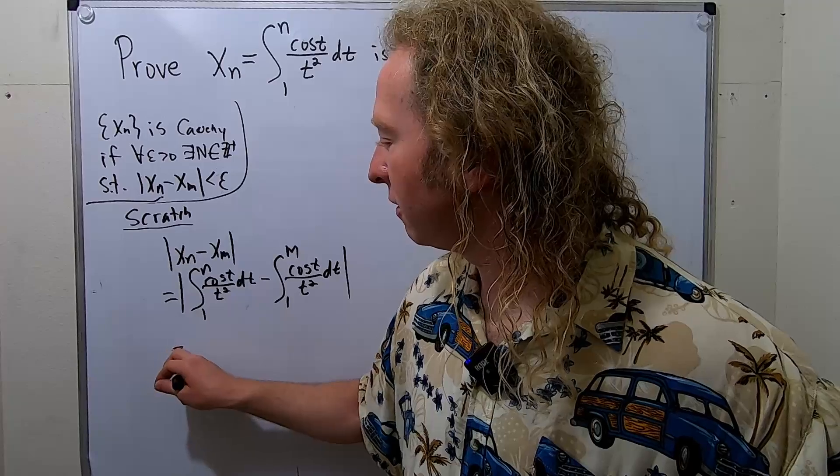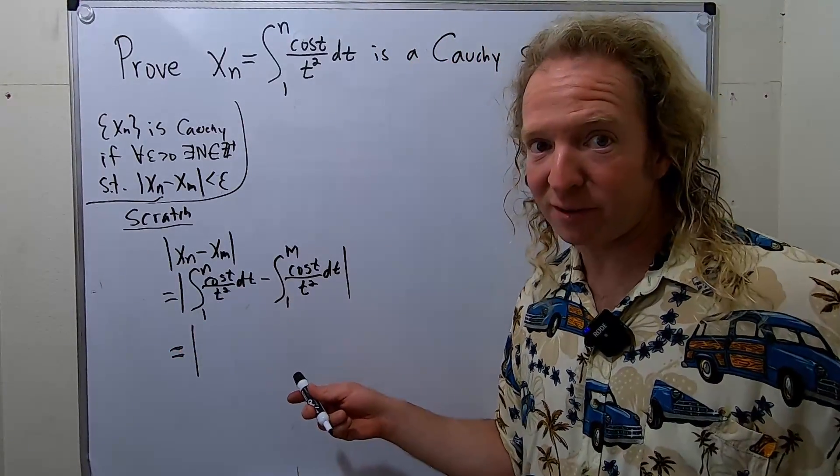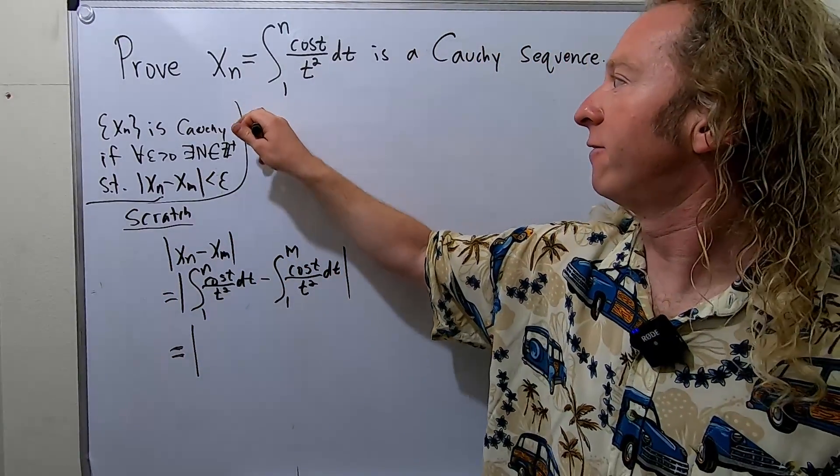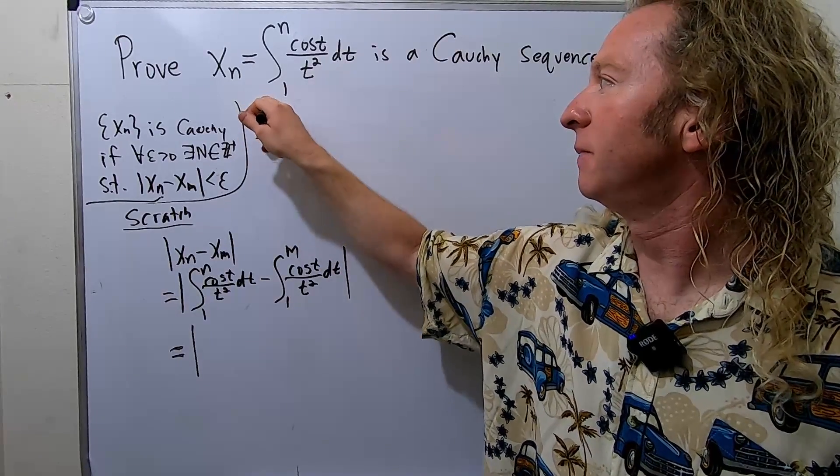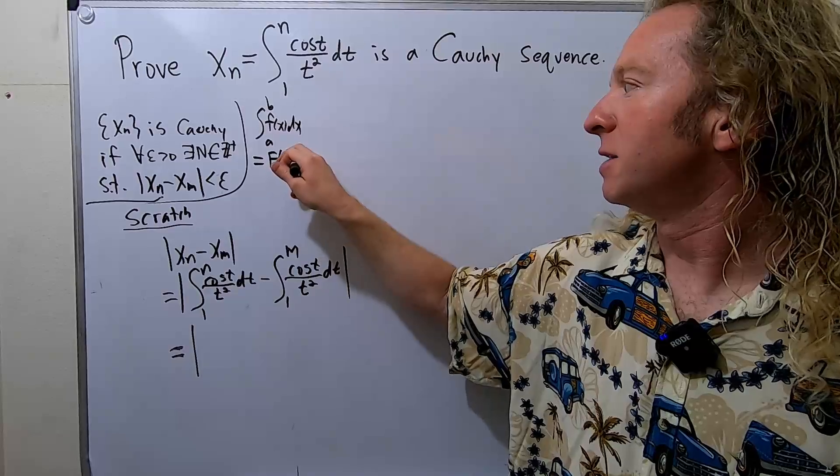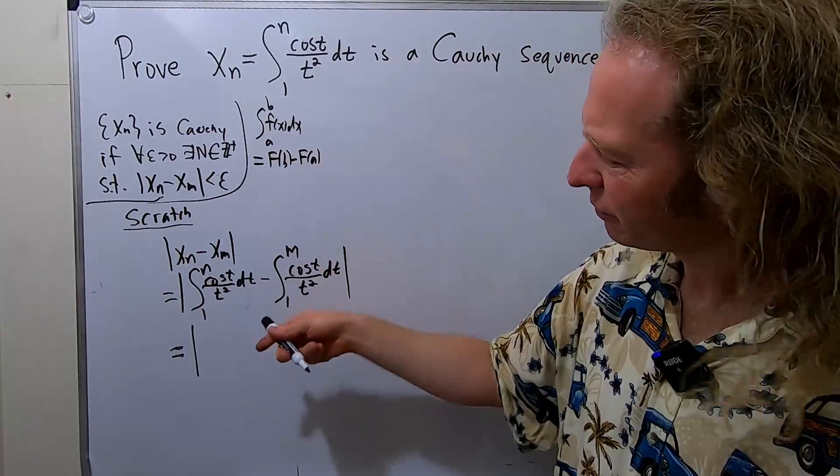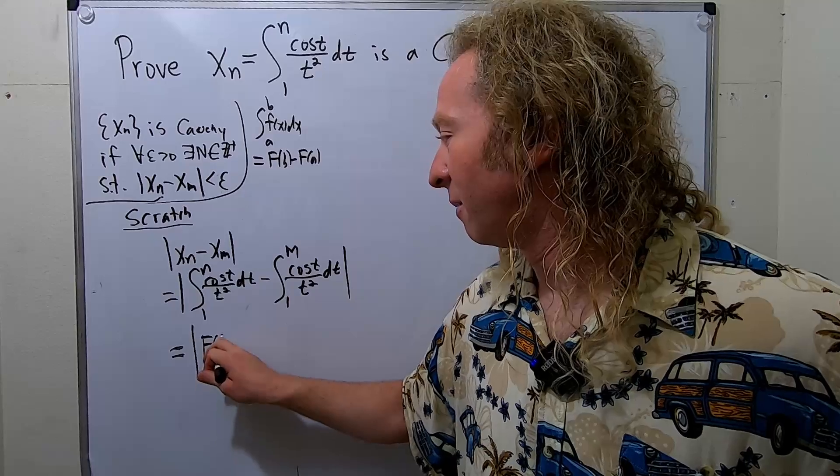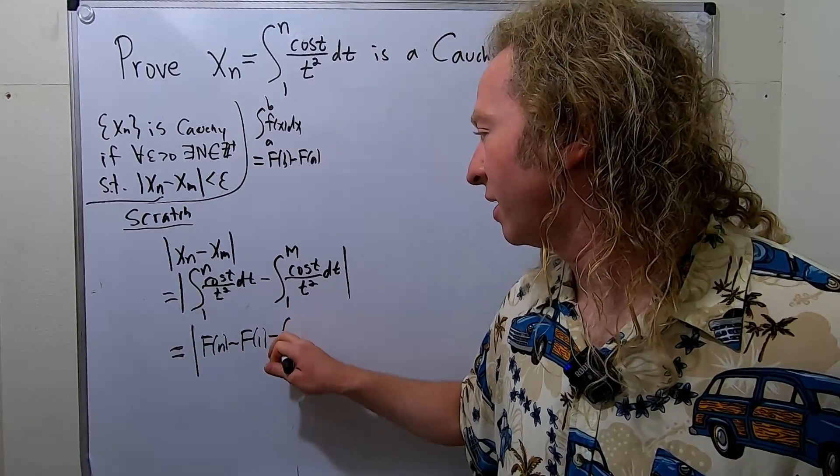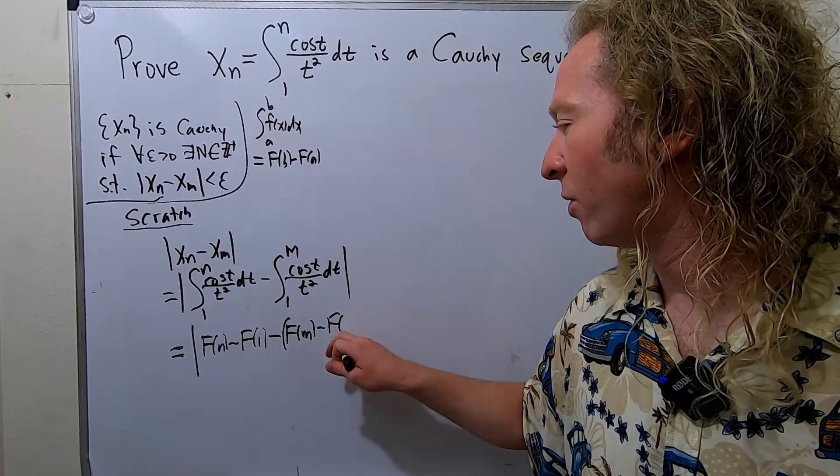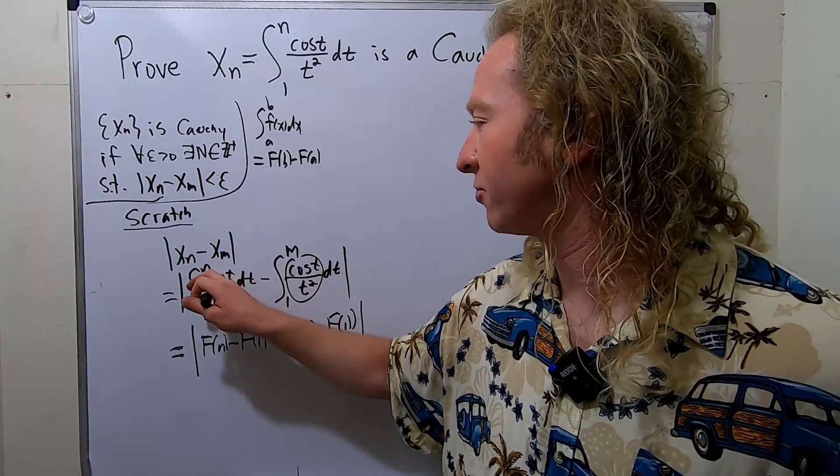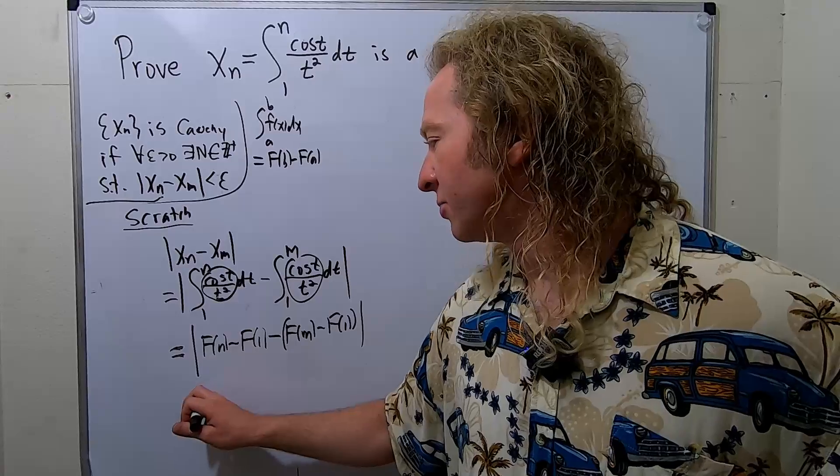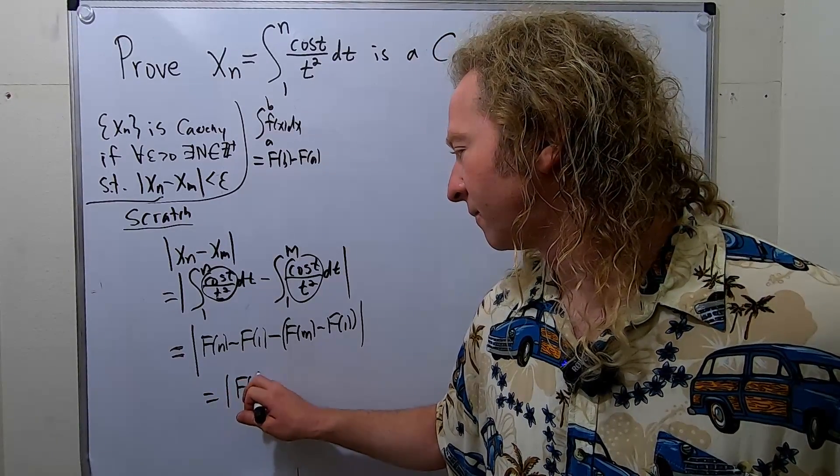So what do we do here? Let's use the first fundamental theorem of calculus. The first fundamental theorem of calculus is that to integrate this, it's f(b) minus f(a). If you have integral of f(x)dx from a to b, this is big F(b) minus big F(a), where big F is an antiderivative for little f. So I don't know how to integrate this, so let's just call it big F(n) minus big F(1) minus, and then this will be big F(m) minus big F(1), where big F is an antiderivative for this.